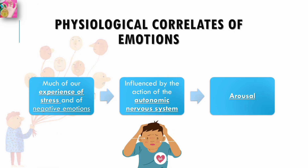In order to understand the interactions between physiology and emotional experience, we need to begin by looking at the physiological mechanisms involved. Much of our experience of stress and negative emotions is influenced by the action of the autonomic nervous system and what we refer to generally as arousal.